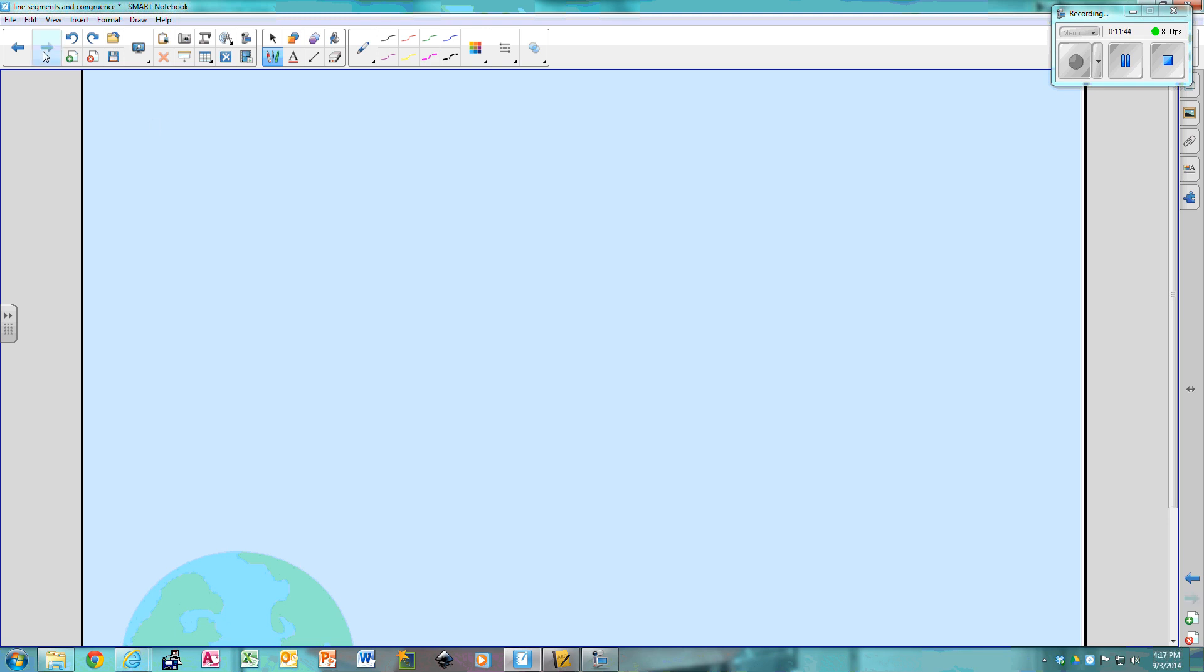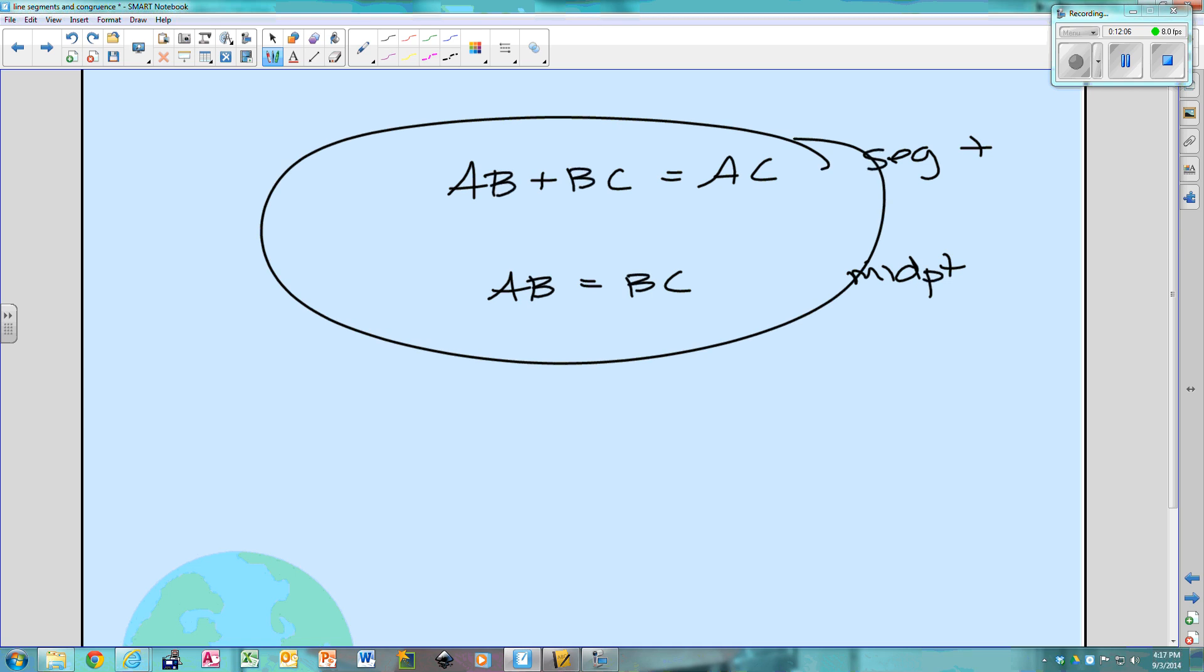Okay, so you have 3 scenarios, and you can just write this at the bottom. You're either going to add 2 pieces together, or you're going to set them equal if it's a midpoint. So this is segment addition, and this is when you have a midpoint. So those are your 2 options, and depending on what information is given will depend on which one you're going to use. See you later.